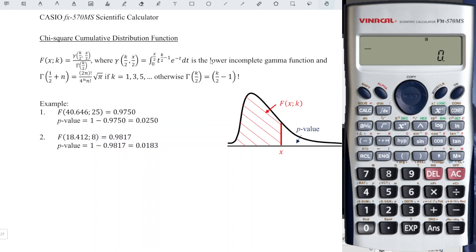We just have to make use of the lower incomplete gamma function as the numerator by using the function here. We replace t by using alphabet x. Make use of the integration function. So we have alphabet x to the power. Bracket is very important for this kind of calculator.